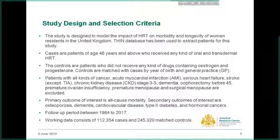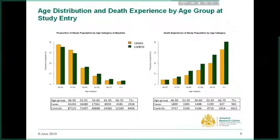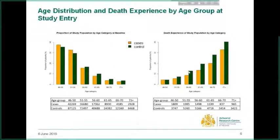The follow-up period is between 1984 to 2017. Our working data consists of 112,354 cases and 245,320 controls. This slide shows the age distribution and death experiences in the study population by age group at baseline. The first part shows the proportion of cases and controls at first HRT prescription. The majority of women took HRT between age group 46 to 55, and the number of first HRT users decreases as age increases. More controls died than cases at follow-up in this study.